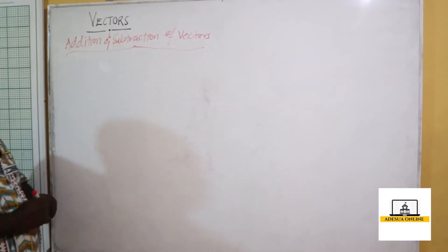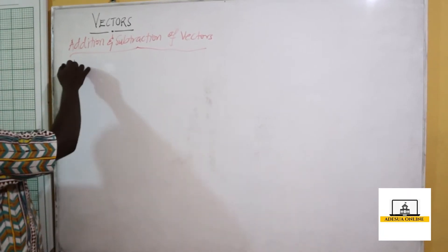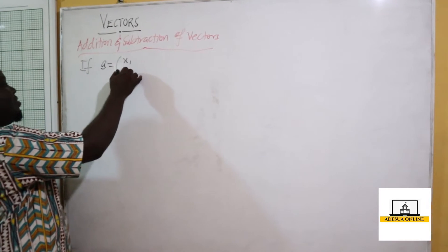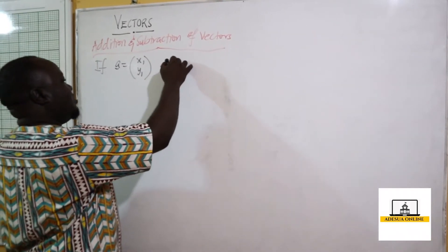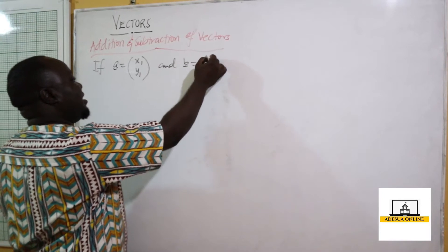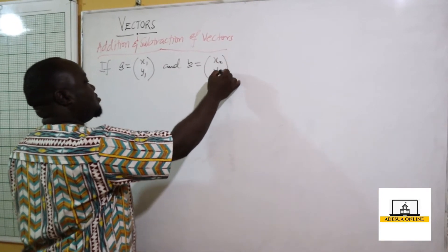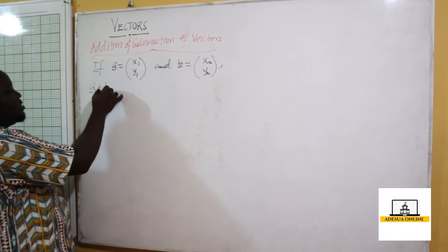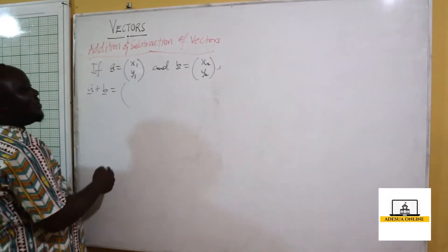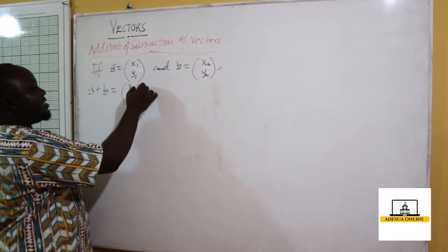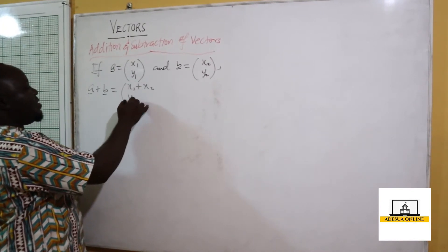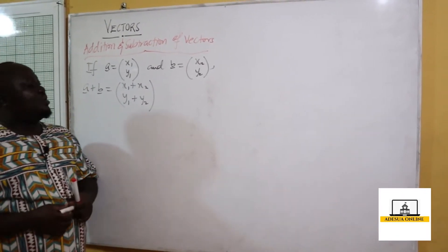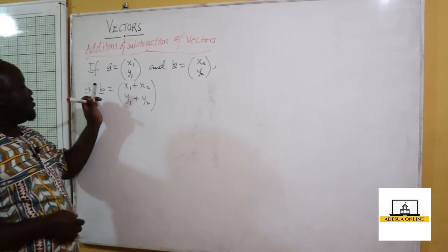If I have a vector a equal to (x1, y1) and b equal to (x2, y2), then a plus b is equal to (x1 plus x2, y1 plus y2). So the top components add with the top and the bottom with the bottom. The same applies to subtraction.